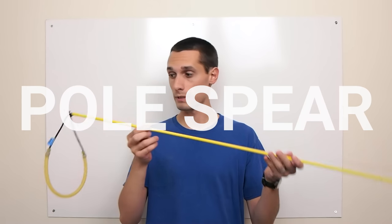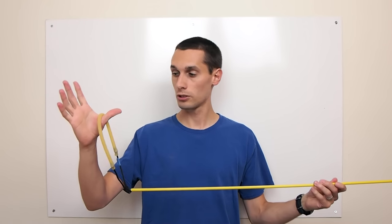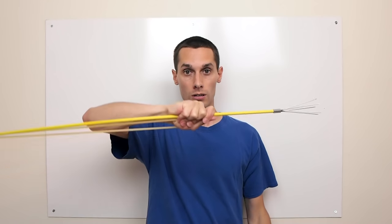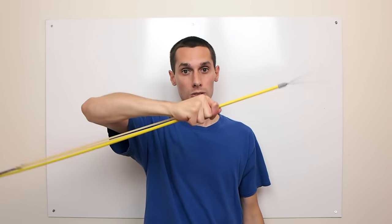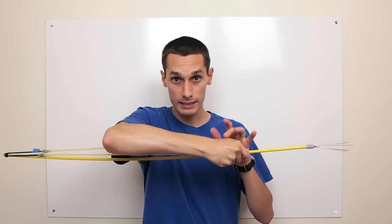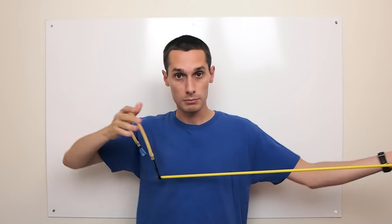To use the pole spear you loop the tubing around your thumb like this, you reach up, hold on to the pole, swim around, look for a fish, aim, and when you release this hand the spear goes flying.